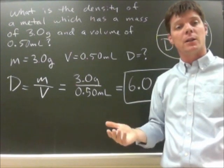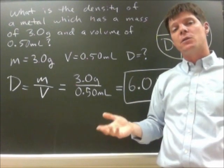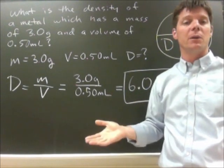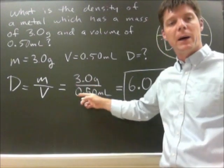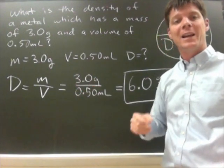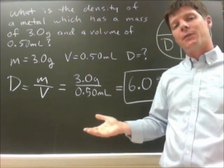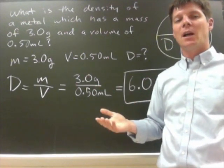My third step is to substitute in my known variables to that equation: 3.0 grams divided by 0.50 milliliters.